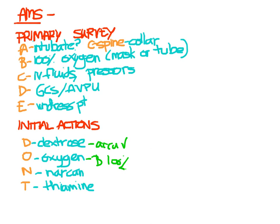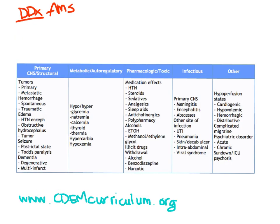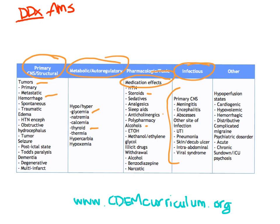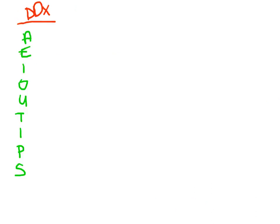The differential diagnosis for altered mental status is huge. There's a large table from cdemcurriculum.org — CDEM stands for Clerkship Directors in Emergency Medicine. Lots of things can cause it: structural problems like tumors or bleeding, metabolic problems like hypoglycemia, hypothyroidism, medications like steroids or anticholinergics, alcohol, infectious causes, shock, and psych issues. This table is cumbersome to remember, so here's a mnemonic to use instead.